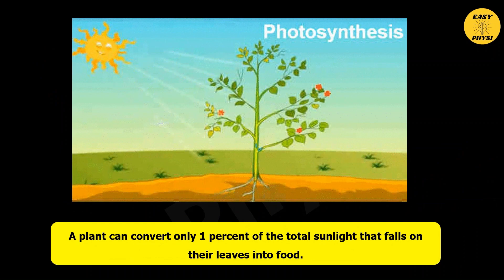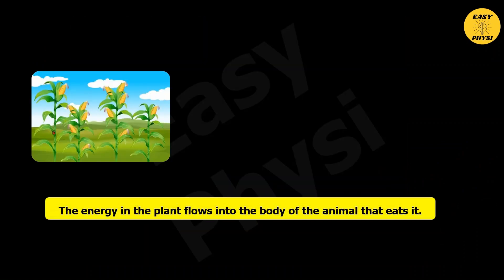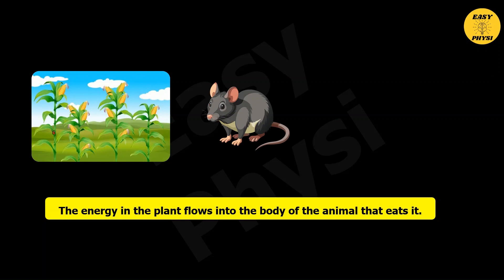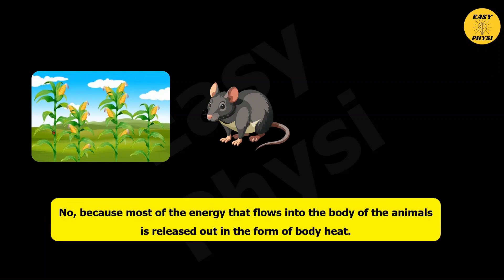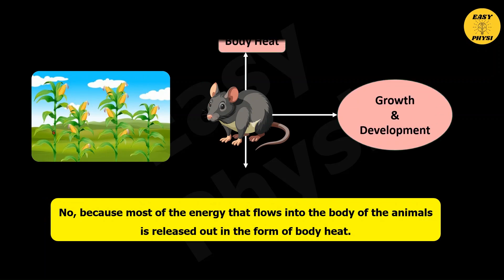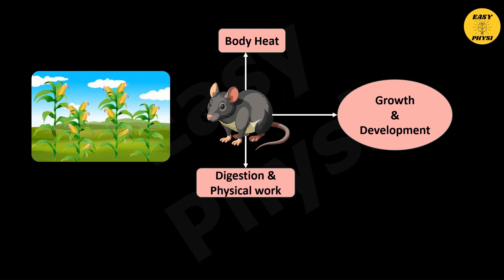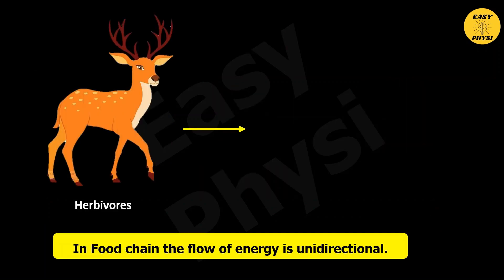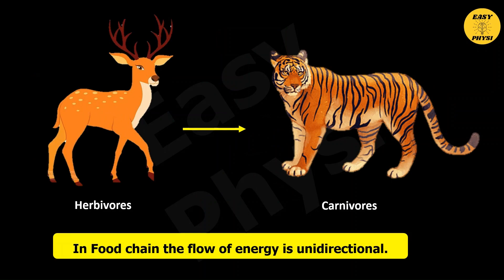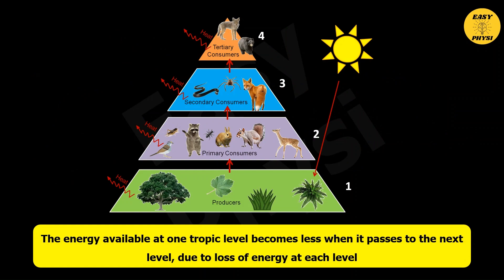A plant can convert only 1% of the total sunlight that falls on its leaves into food. The energy in the plant flows into the body of the animal that eats it, but the animal cannot use the whole energy obtained from plants to build its body, because most of the energy is released as body heat. Only some energy is used for digestion and other physical activity, and 10% is used for growth and development. In a food chain, the flow of energy is unidirectional — it flows from herbivores to carnivores, never from carnivores to herbivores. The energy available at one trophic level becomes less when it passes to the next level due to loss of energy at each level.